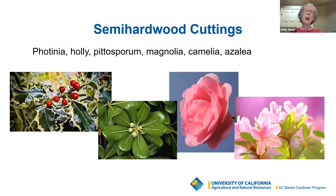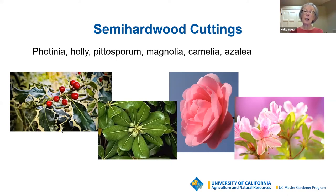Semi-hardwood cuttings are cuttings of new growth from woody broadleaf evergreen shrubs, usually taken in late summer — mid-July to early September — after rapid summer growth, when the wood is firm but not fully matured. These typically root in four to six weeks using the same rooting instructions we've covered. Pictured here are holly, pittosporum, camellia, and azalea.